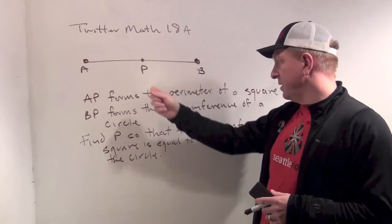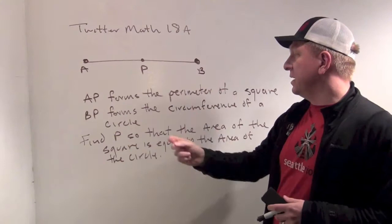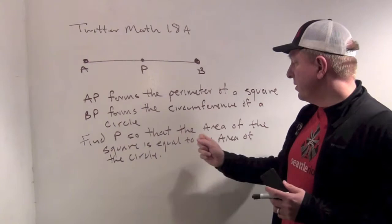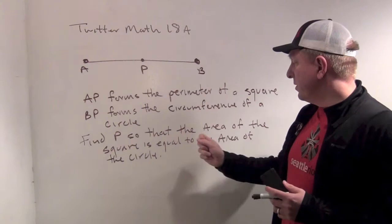So, the problem is this. You have a line segment AB and a point P on that line. You take AP and have that form the perimeter of a square. You take BP and have that form the circumference of a circle. And you want to find P so that the area of the square is equal to the area of the circle. So, that's the problem.